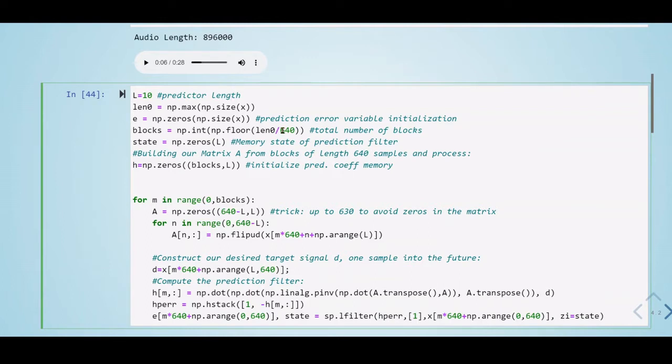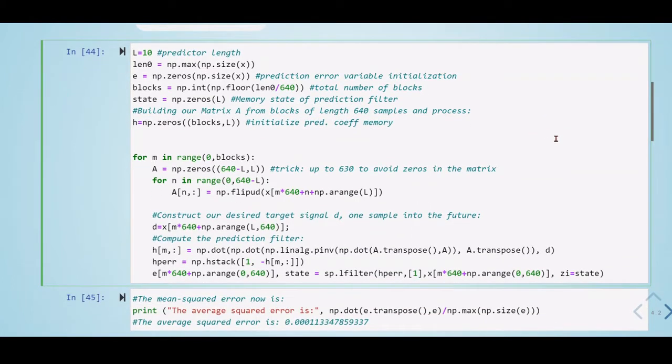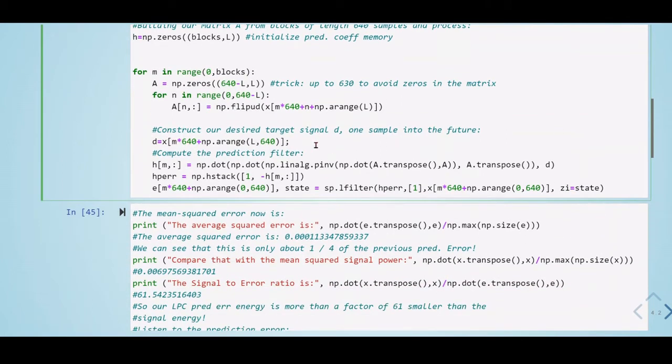We have a memory state for the prediction filter. We build the matrix A from blocks of length 660 samples, and we construct our desired target signal D, one sample in the future, and compute the prediction filter.